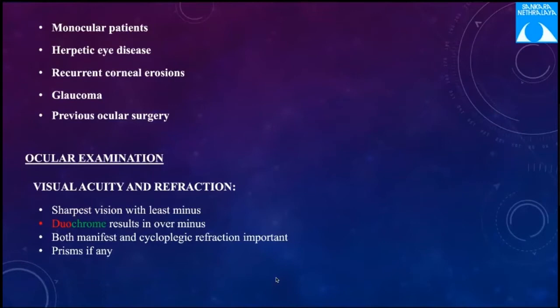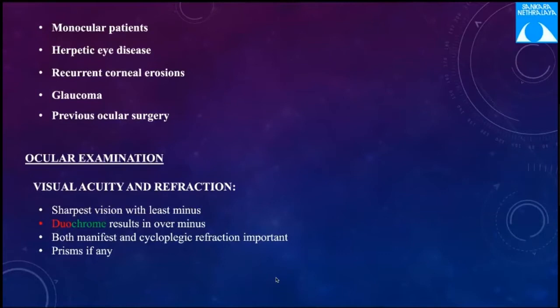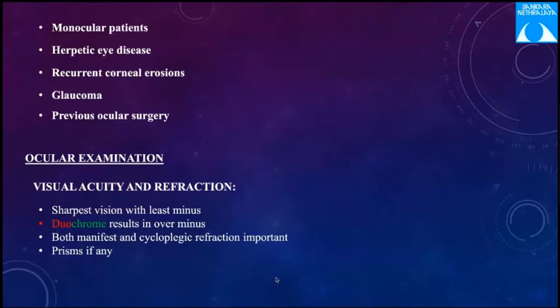Glaucoma is a relative rather than absolute contraindication. With glaucoma, the progressive field disturbances change, and IOP measurement post-LASIK becomes a challenge. These are young patients, and since glaucoma worsens slowly over time, post-op monitoring becomes difficult. You have to weigh the pros and cons. Patients with a strong family history of keratoconus should also be avoided.